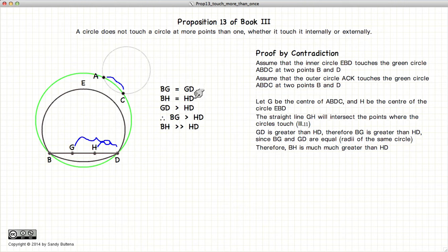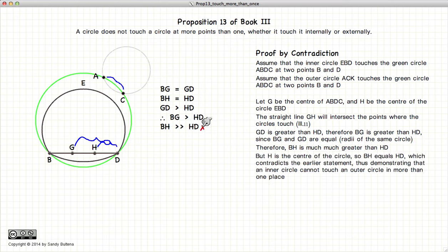However, at the beginning, we had that BH is equal to HD because H is supposed to be the center of one of these circles. Well, if H is the center of one of these circles, this relationship cannot be true. And if this relationship cannot be true, the whole hypothesis falls apart. So in other words, we cannot have the two points B and D as the point where the two circles touch. So there cannot be two points where the circles touch. Using the same arguments, you could also go for three points, four points, etc. So we have thus demonstrated by contradiction that these two circles can only touch at one point.